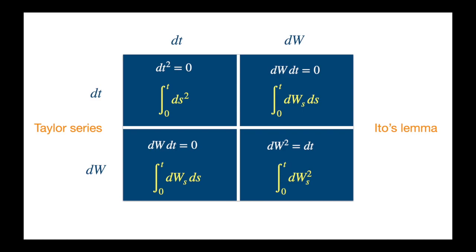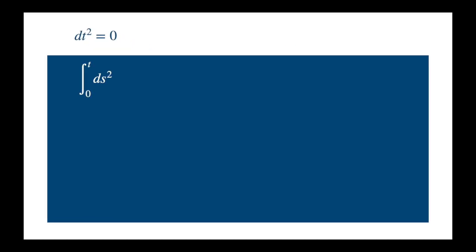In the previous video, we explained the dW times dt term, and now we are using the same very logic to see why dt squared equals 0. It is going to be a bit easier, because we don't have any stochastic term in dt squared, but it is going to be the same drill.